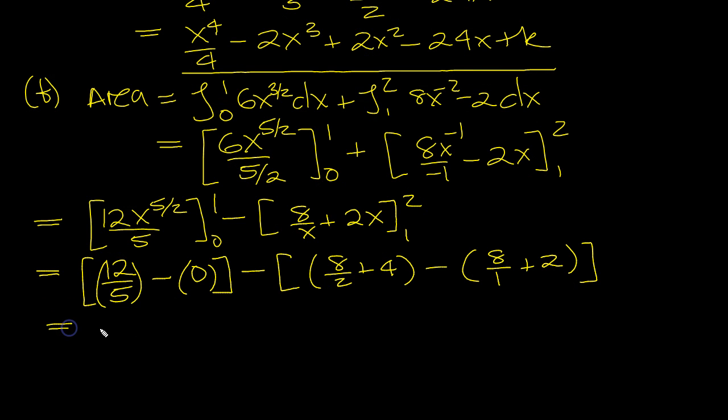So that's equal to 12 over 5 is 2.4, because it's 24 over 10, which is 2.4. Minus, now we've got this whole thing here. This is 4, plus 4 is 8, minus 8 plus 2 is 10. So we've got 2.4. This is minus 2 in here, so it makes it plus 2, plus 2 equals 4.4. And that would be units squared, because it's a measure of area.